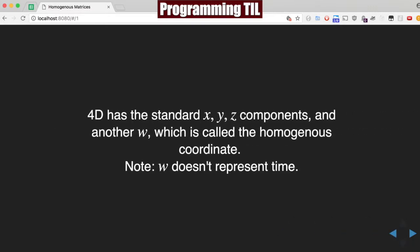So 4D has another component in addition to the standard XYZ components, W, and that's called the homogeneous coordinate. And note that it doesn't stand for time.